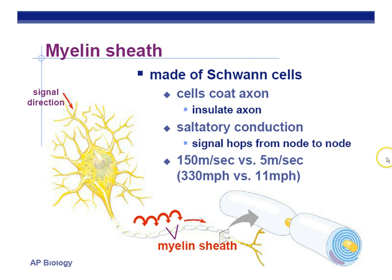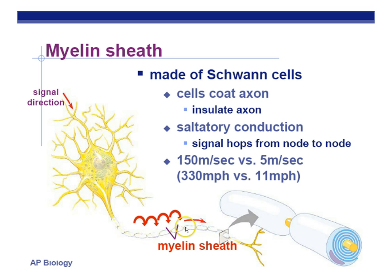That was the basic explanation of how neurons transmit an action potential or nerve impulse. However, there are some things you should also know. Around the outside of the axon, we have an insulated sheath called a myelin sheath, made up of something called Schwann cells. The myelin sheath, made up of Schwann cells, insulates the axon. What happens as a result is something called saltatory conduction. Saltatory conduction increases the speed of the nerve impulse as the signal hops from node to node. The impulse jumps over the myelin sheath areas — the Schwann cells — and is conducted even faster. We're talking about 150 meters per second versus 5 meters per second without the myelin sheath.